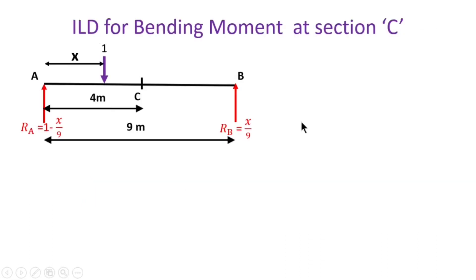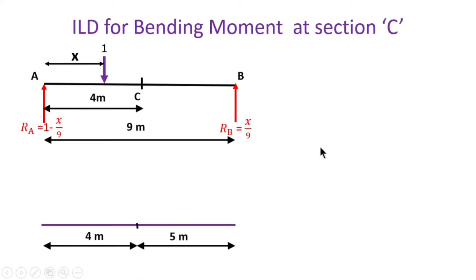The first step is to draw the ILD for the bending moment at section C. To find the ILD, you apply a unit load on the beam at distance x from the left support, find the reactions, and draw the ILD. Draw a horizontal line equal to the length of the beam and draw the ILD. The ILD for the bending moment at section C has a peak ordinate of 2.22.